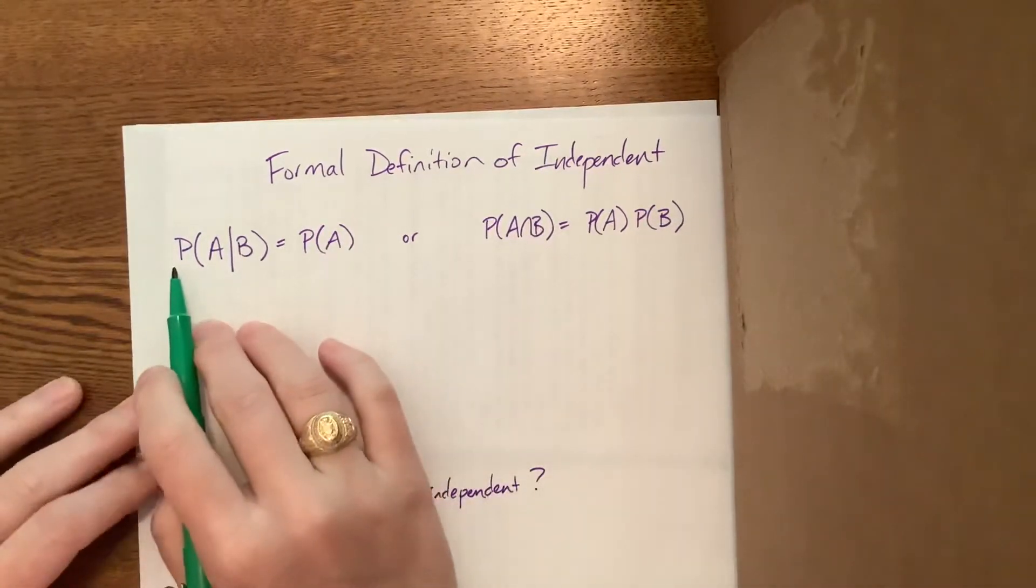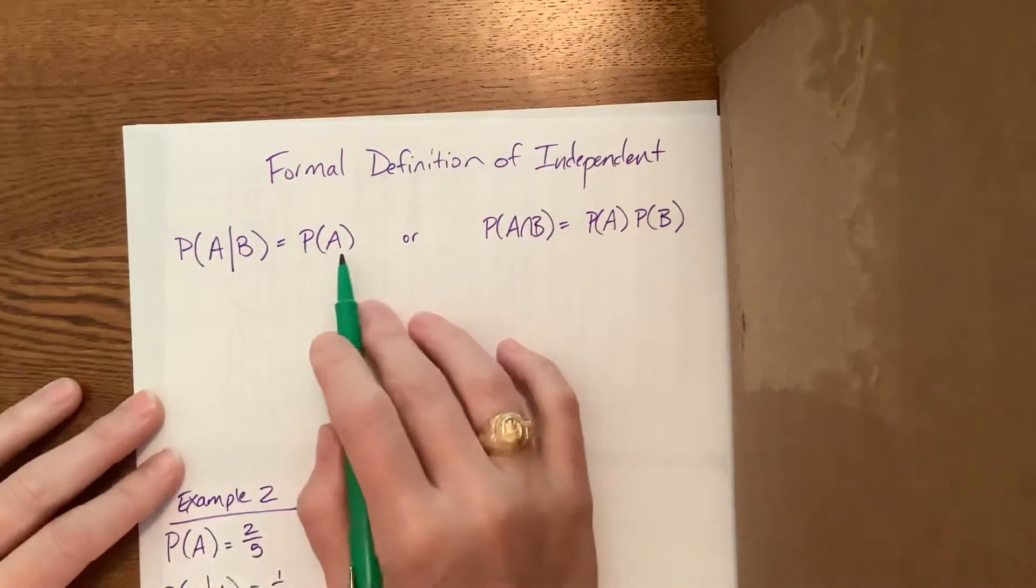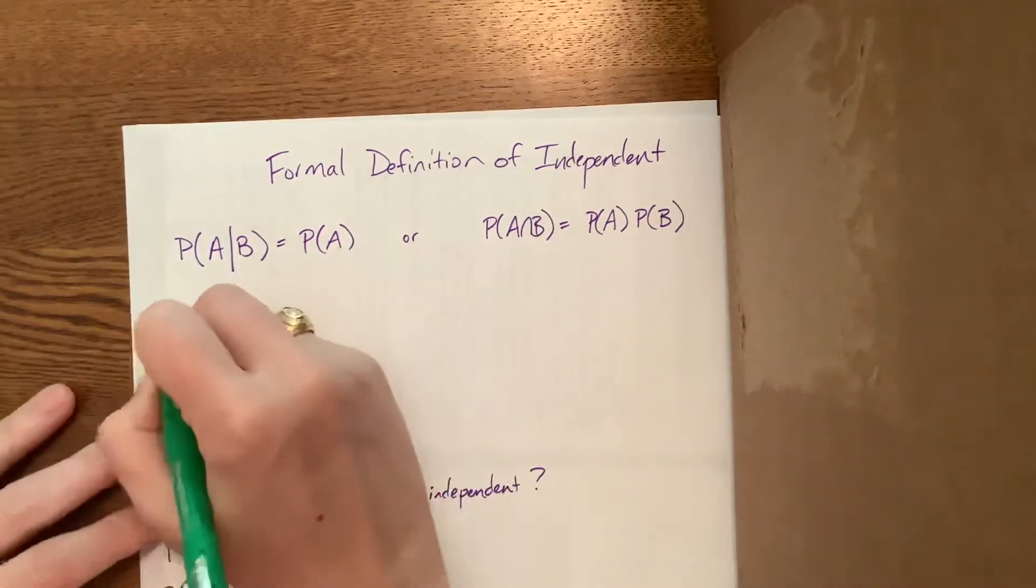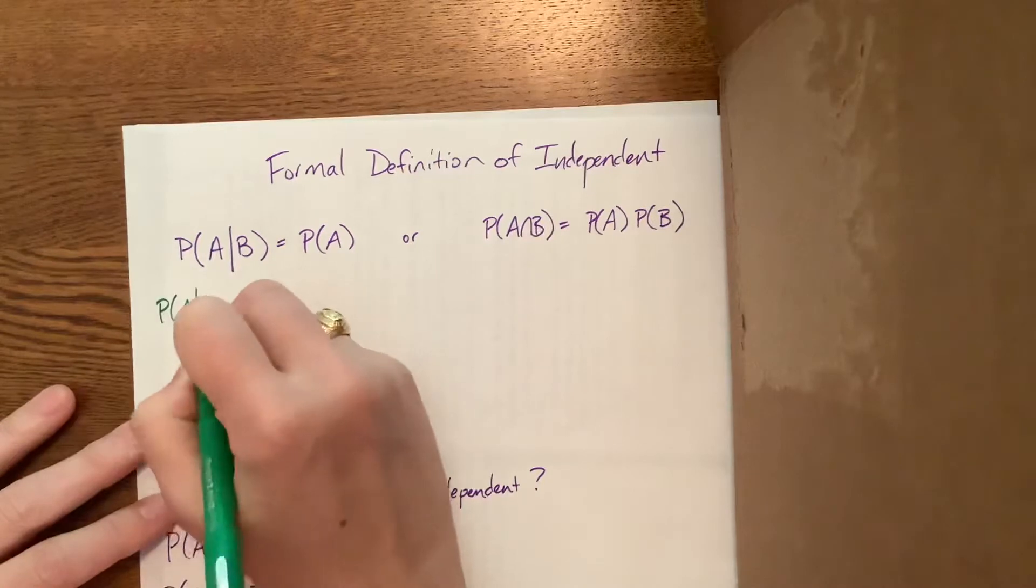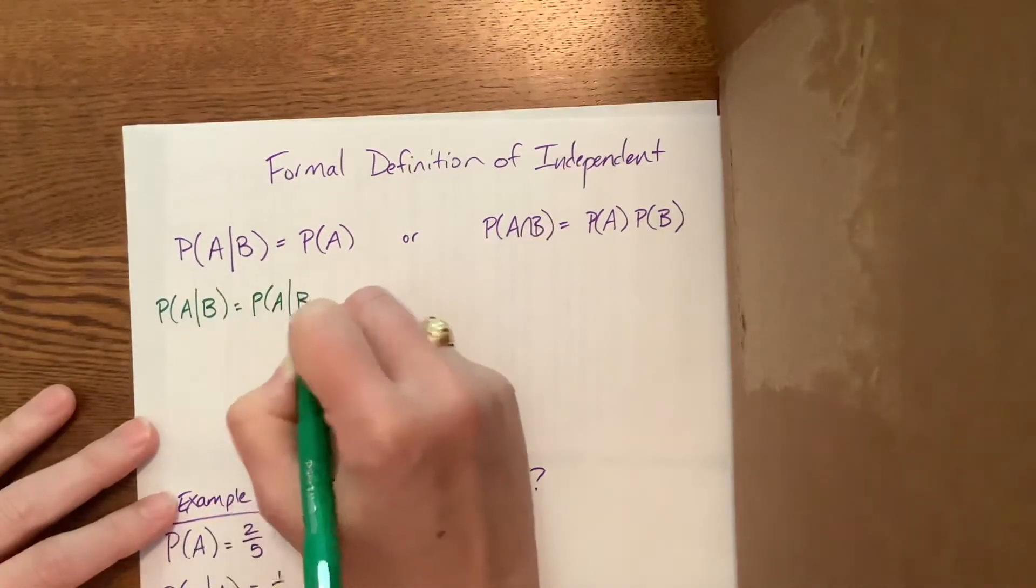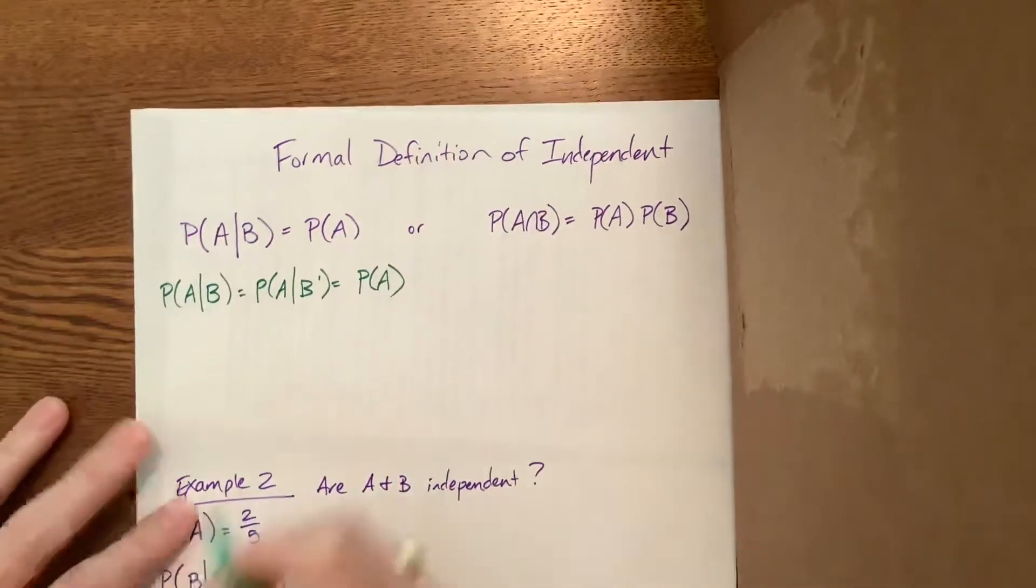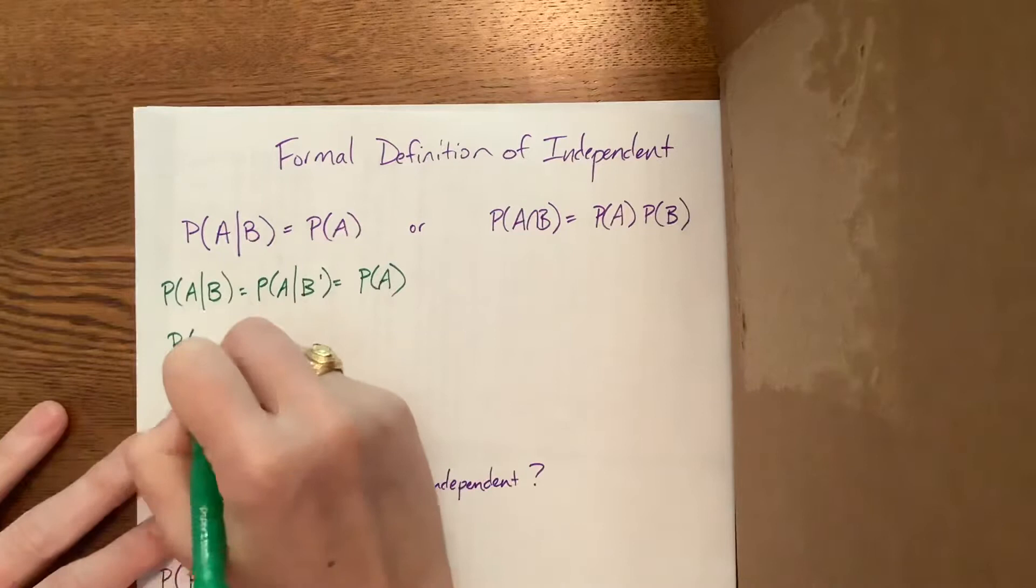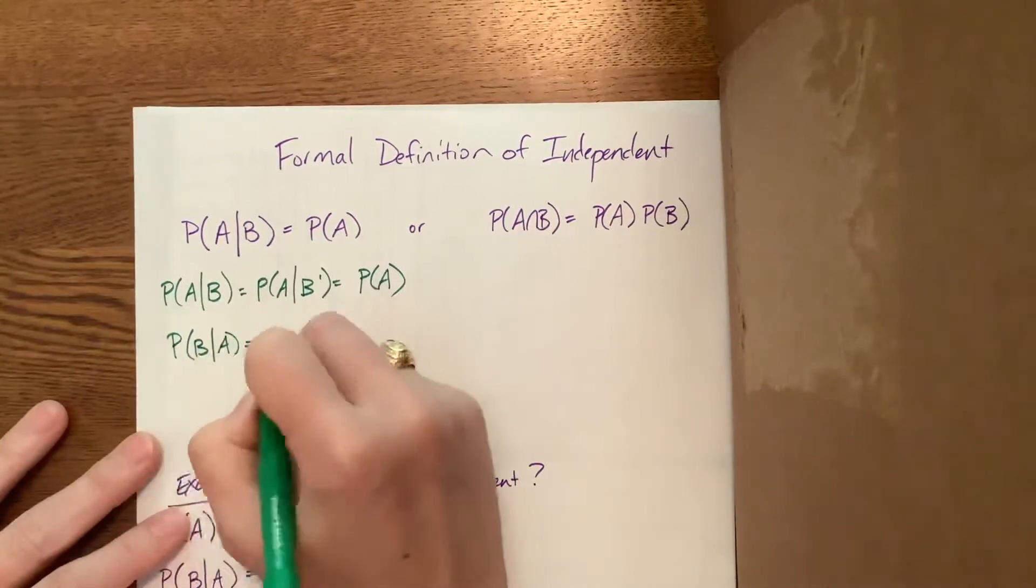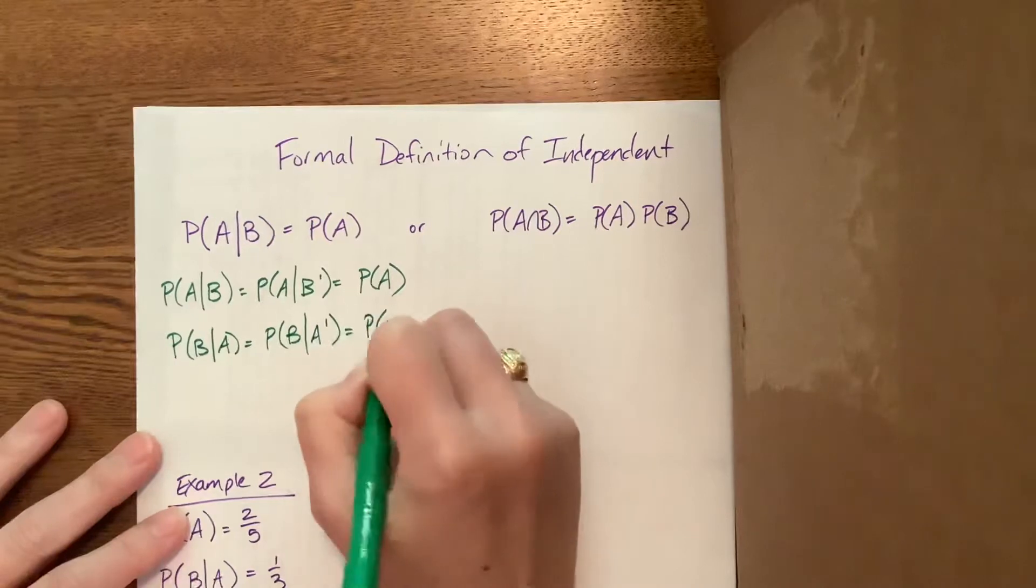So what we find here is that the probability of A given B would be exactly equal to the probability of A. Our book extends this and says the probability of A given B would be the same as the probability of A given not B, which is the same as the probability of A. And they would even say that the probability of B given A would be equal to the probability of B given not A, which is still the probability of B.